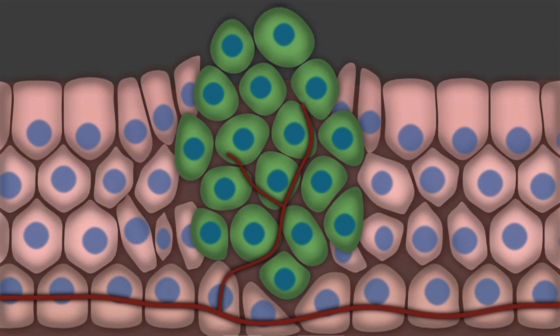Unfortunately, these vessels allow cancer cells to spread to other parts of the body. Some early cancers stop growing and never spread. These are called benign tumors. However, many cancers invade tissue around them and spread to other parts of the body. These are malignant cancers. To learn more, see the video called How Cancer Spreads.